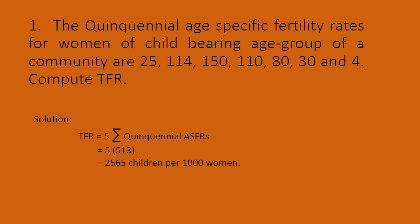TFR = 5 into (25 + 114 + 150 + ...) = 5 into 513 = 2565. So the answer is 2565, which indicates that for every 1000 women, 2565 children are born. This is what the total fertility rate indicates.